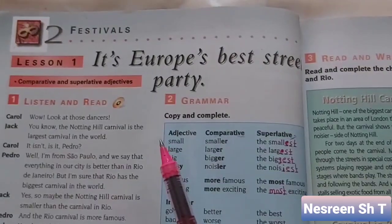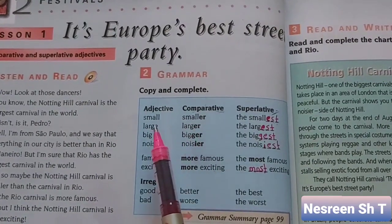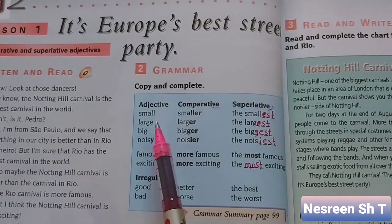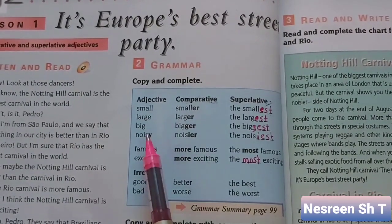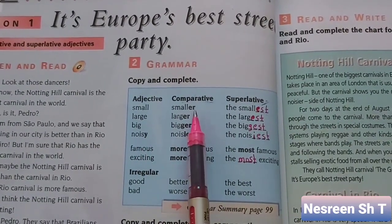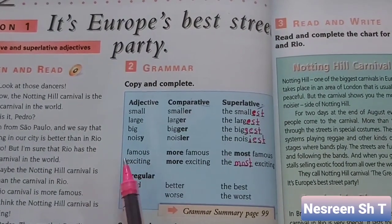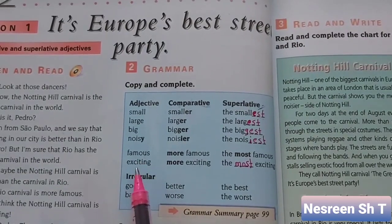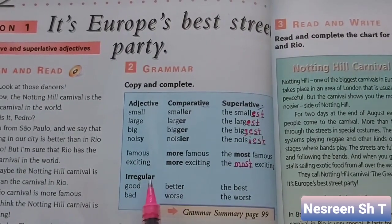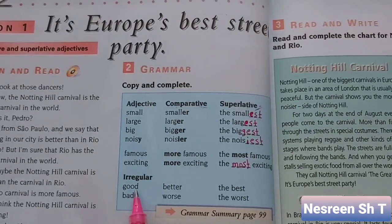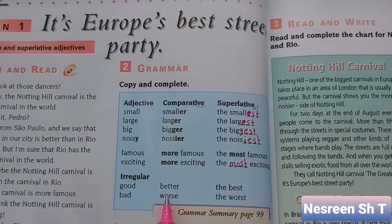Hello students. In the previous lecture we talked about comparative adjectives. We said that if we have short adjectives, for example small, large, big, noisy, we add -er at the end of the adjective. If we have long adjectives, for example famous and exciting, we add more. Don't forget irregular adjectives: for example, good becomes better and bad becomes worse.